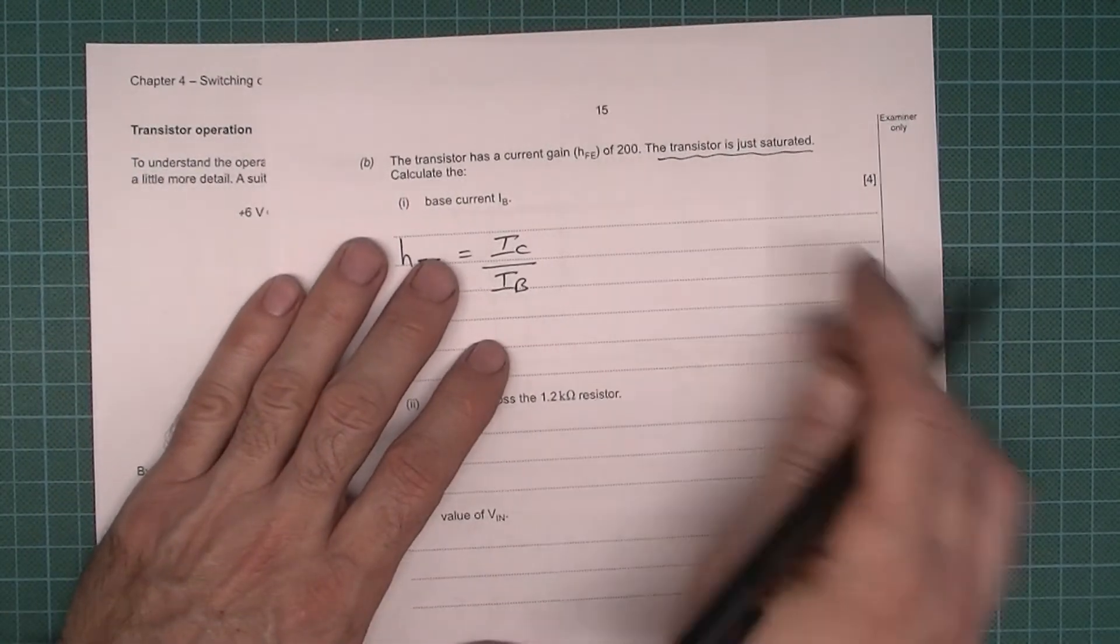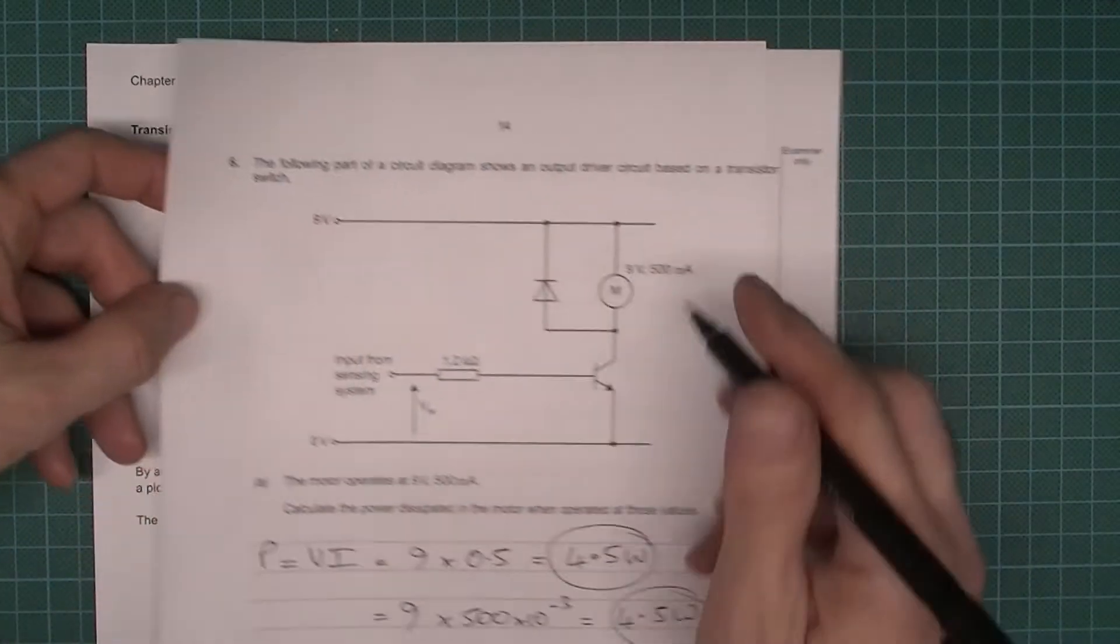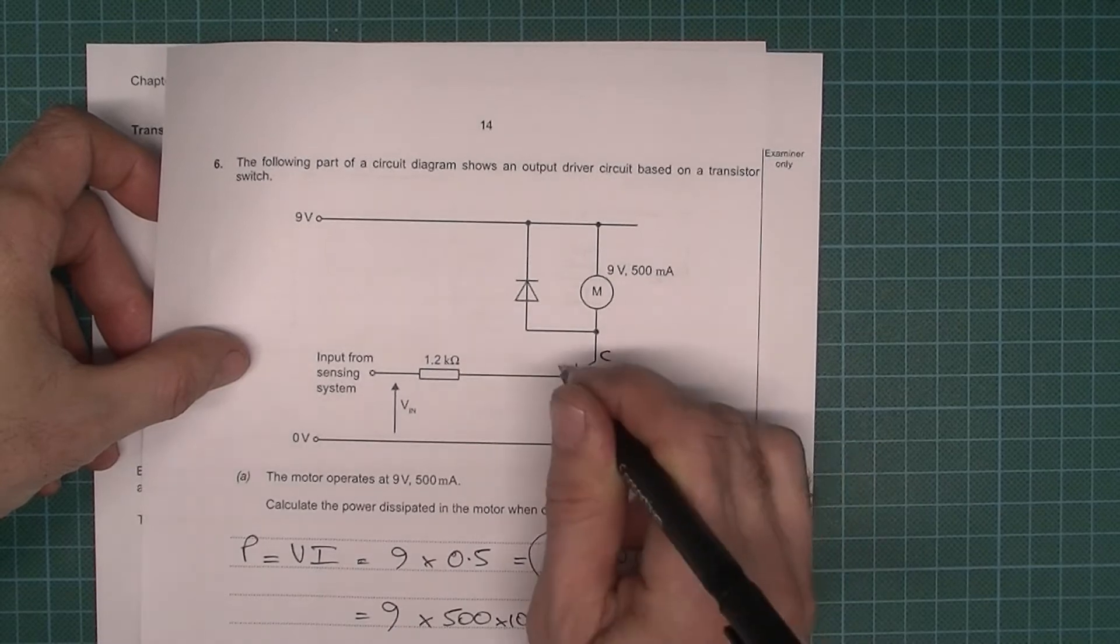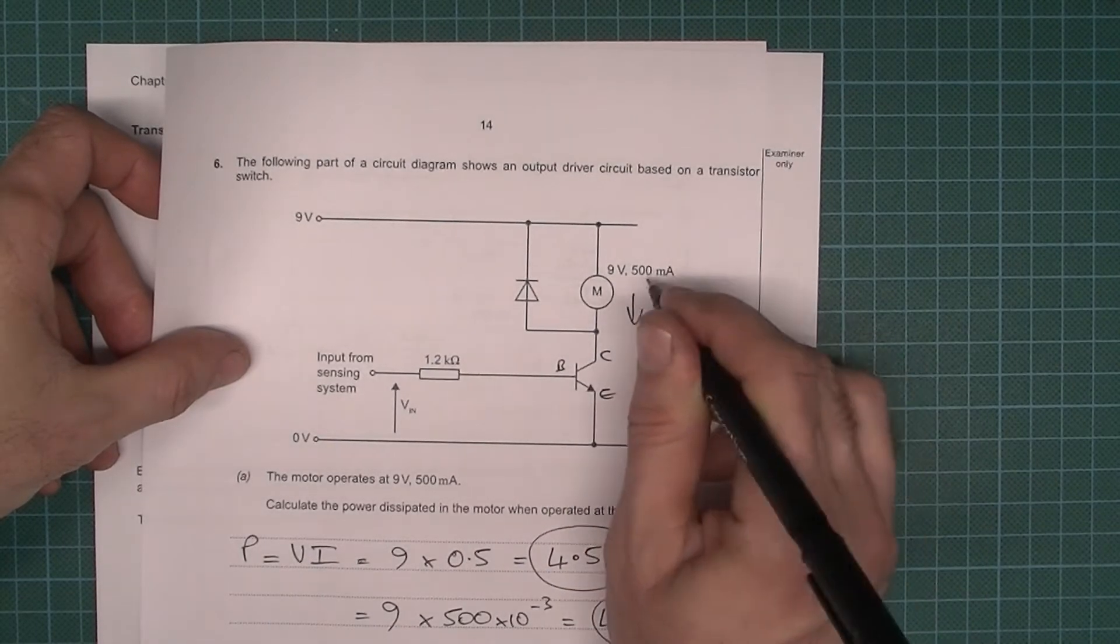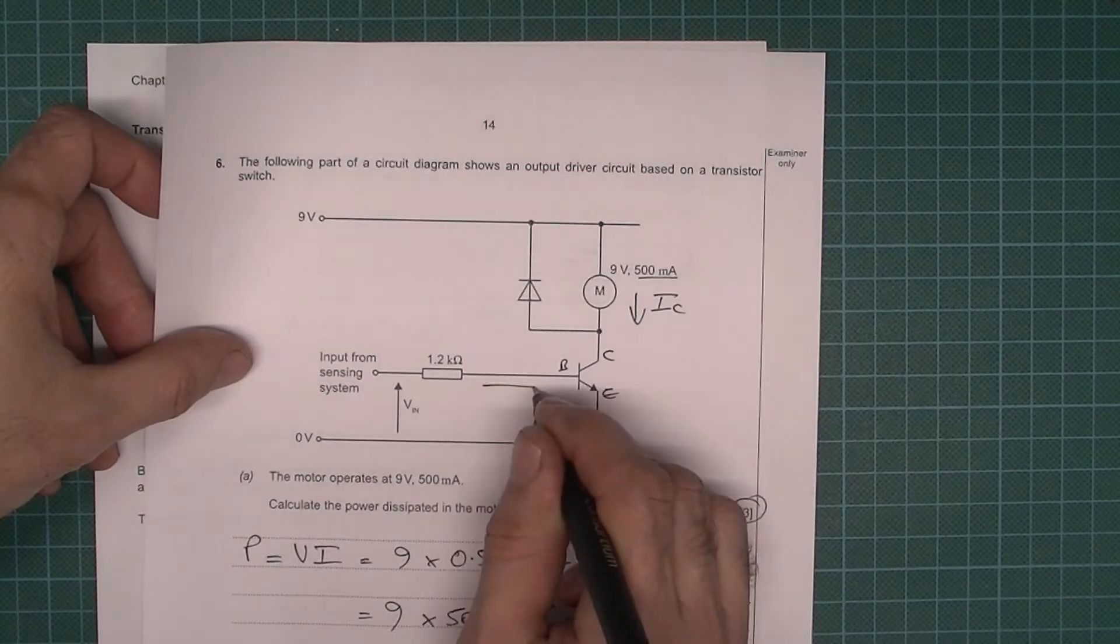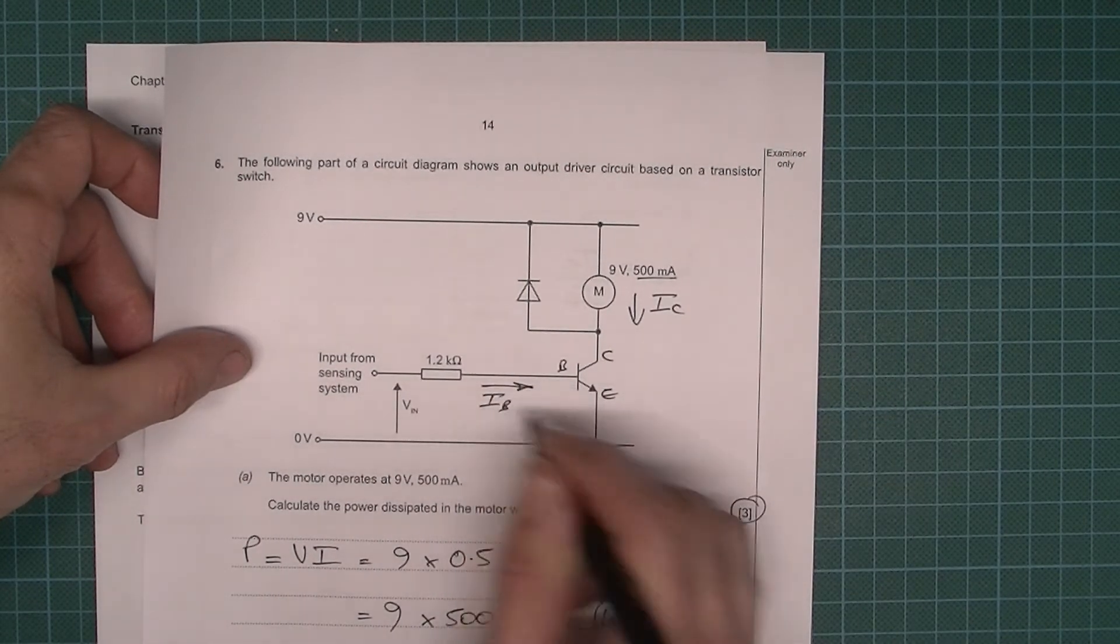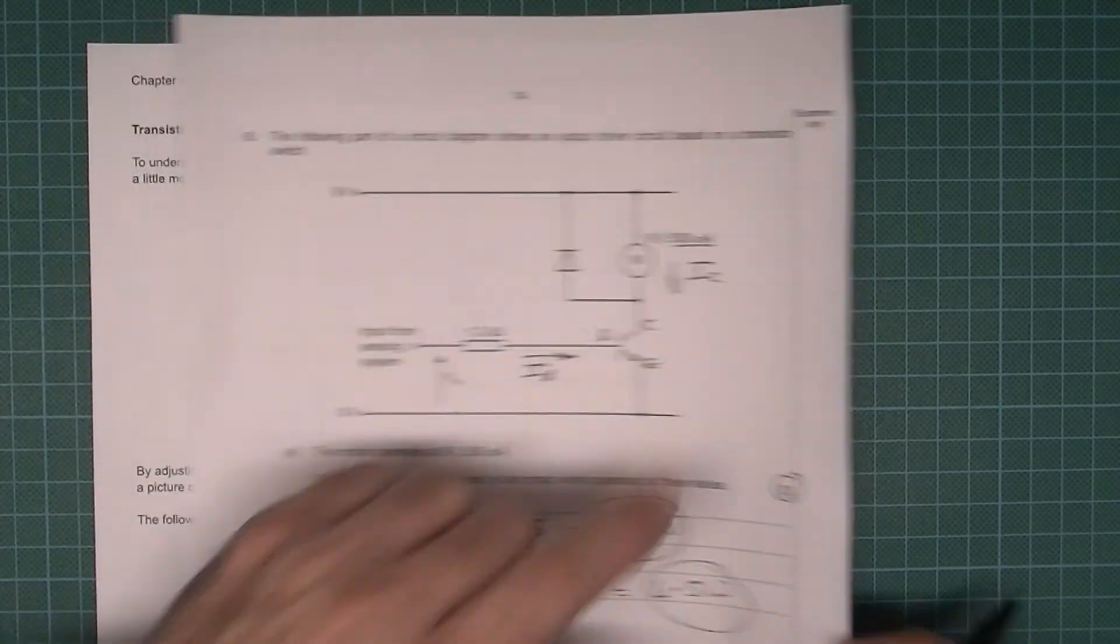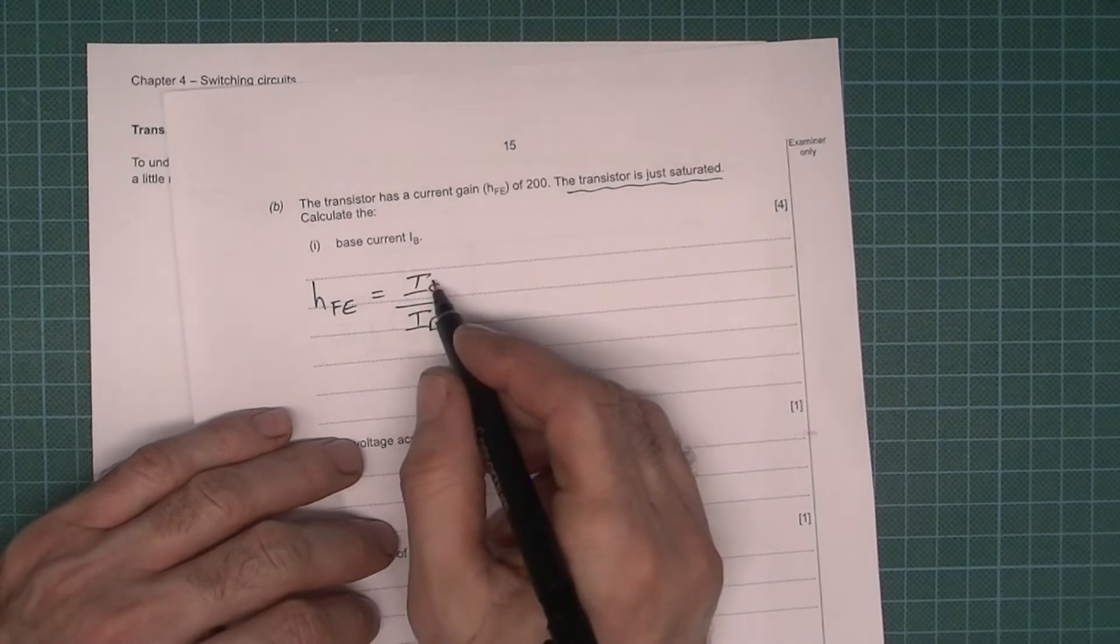So what do we know so far? Well, we know the collector current. This is the collector current. Remember, that's a collector, that's the emitter, that's the base. So this 500 milliamps here, that is the collector current. The base current is that one. Normally we don't talk about the emitter current. So collector current, we know the collector current.